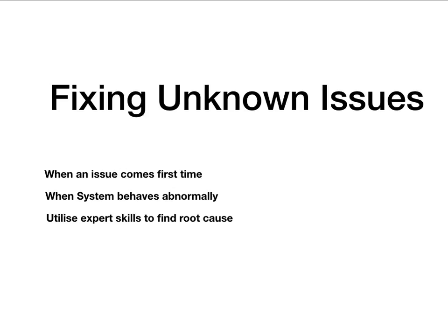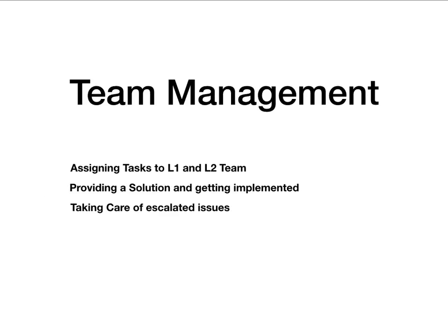Fixing unknown issues: sometimes an issue comes for the very first time and there is no prior information about it, but it still has to be fixed. At that moment L3 engineers are supposed to fix it. It could be any situation where a system behaves abnormally and the engineer has to utilize expert skills to find the root cause and apply the appropriate fix.